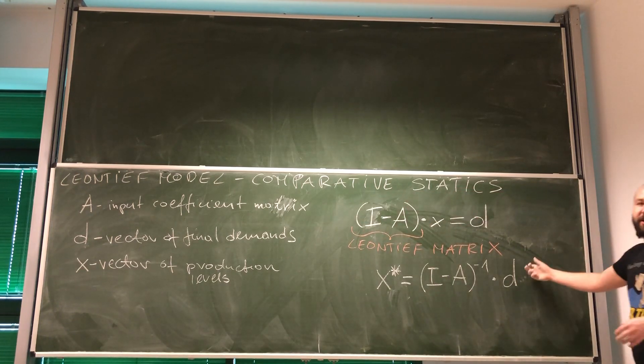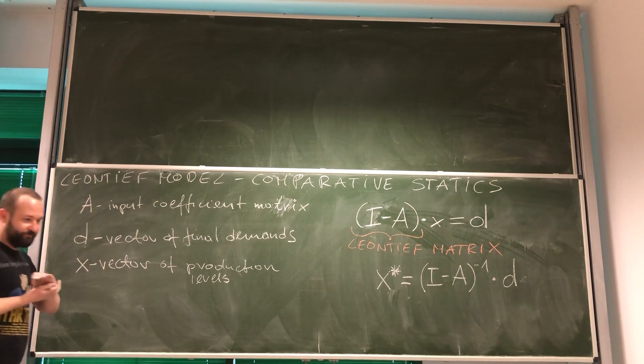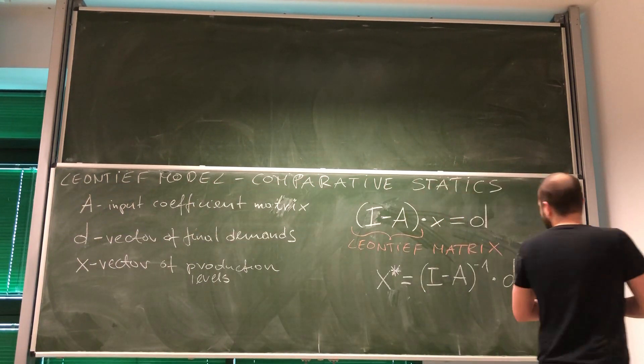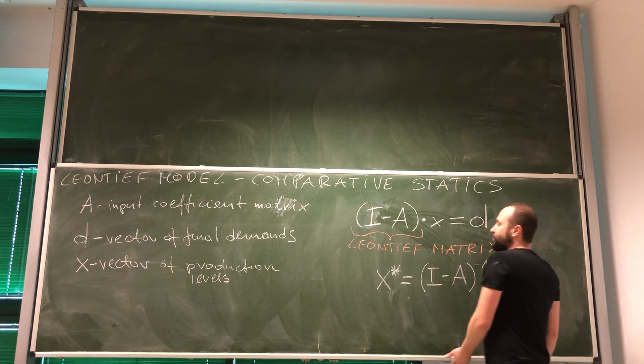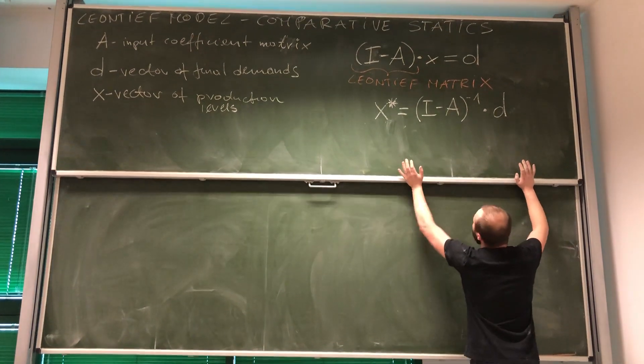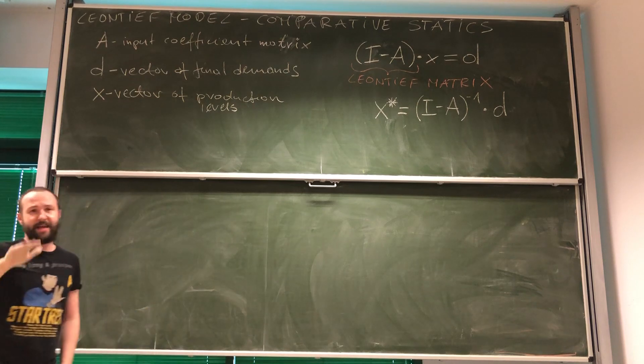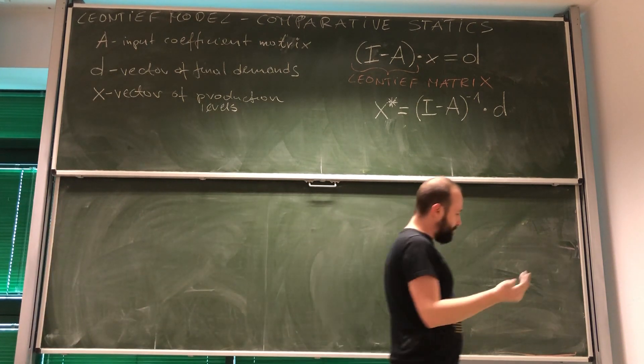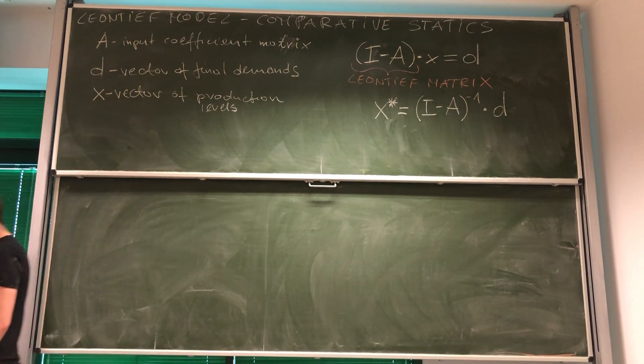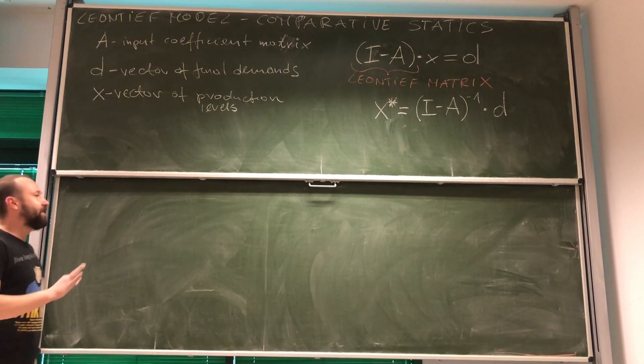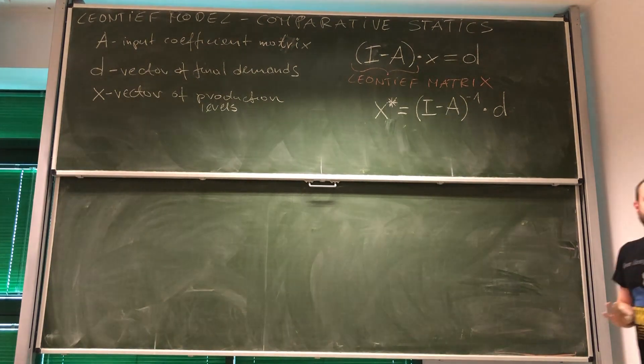But the situation is very different with final demands. People very often, customers change their preferences, and a vector of final demands can change quite frequently. So, how can we actually see what is going to happen to the levels of production in different sectors of the economy as final demands for different goods are changing? Well, this is actually a very easy task. Because again, we can use comparative studies.